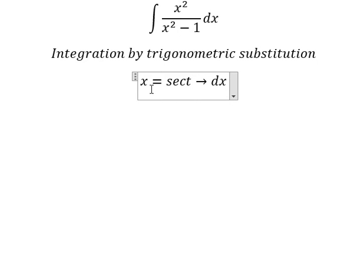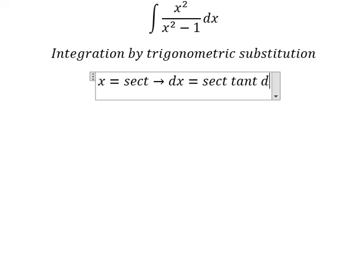If we take the first derivative for both sides, you get dx equals secant t tangent t dt.